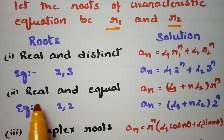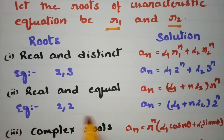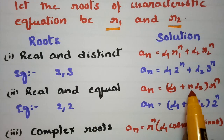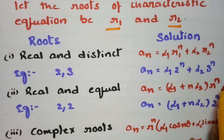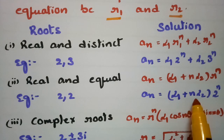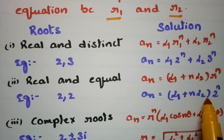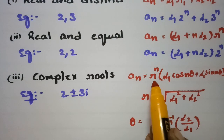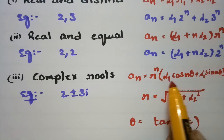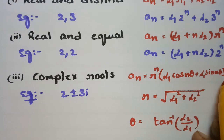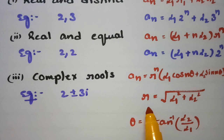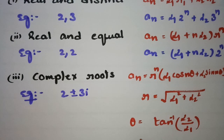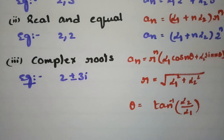If the roots are real and equal — for example 2 and 2 — the solution is An = (α1 + n·α2)·R^n, which can be written as (α1 + n·α2)·2^n. If the roots are complex, An = R^n·(α1·cos(nθ) + α2·sin(nθ)), where R = √(R1² + R2²) and θ = tan⁻¹(α2/α1).